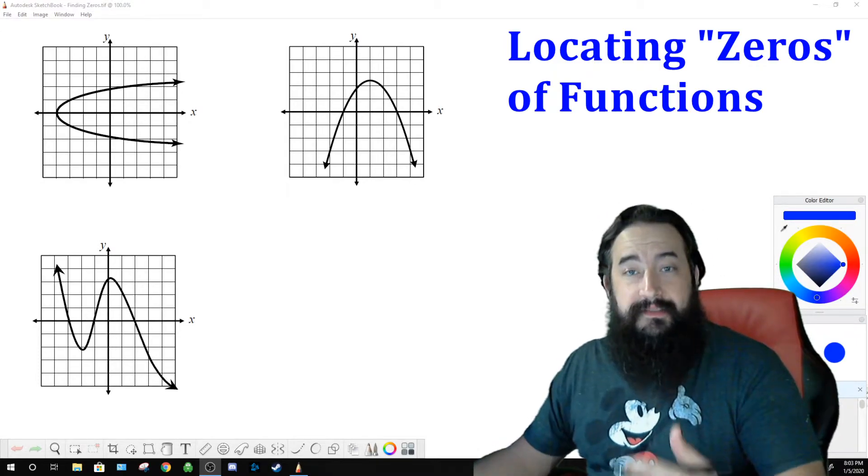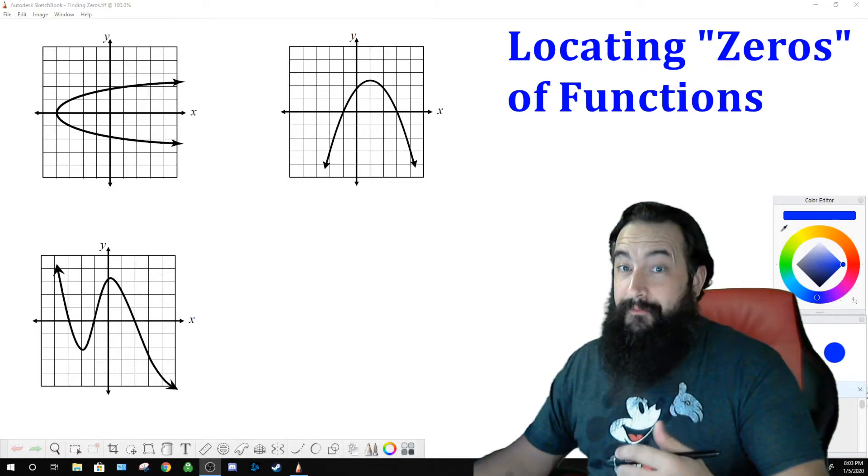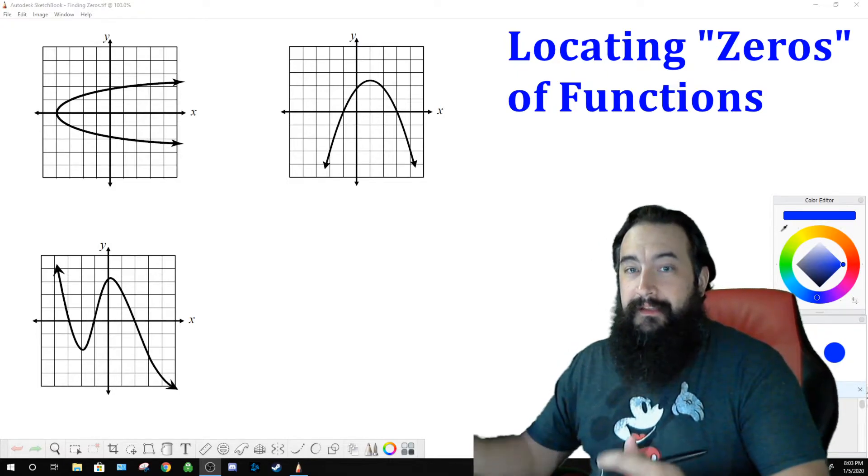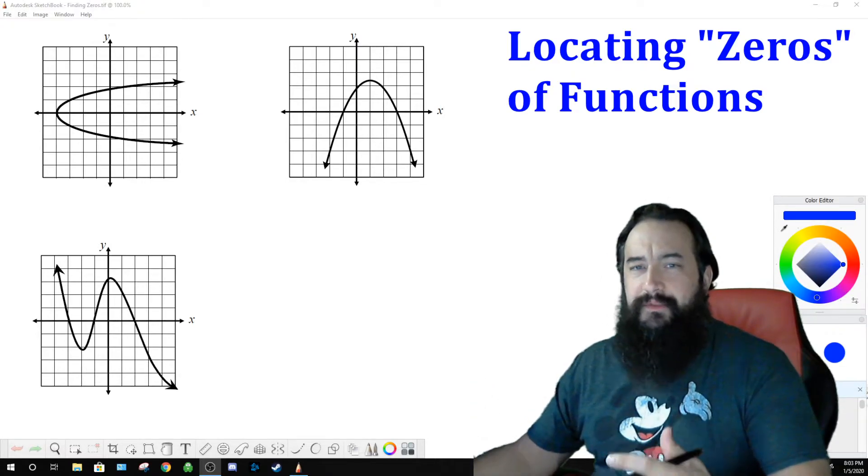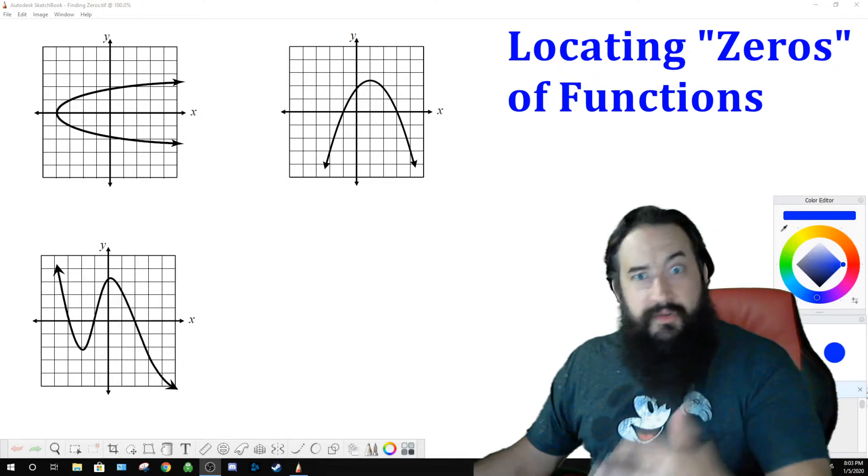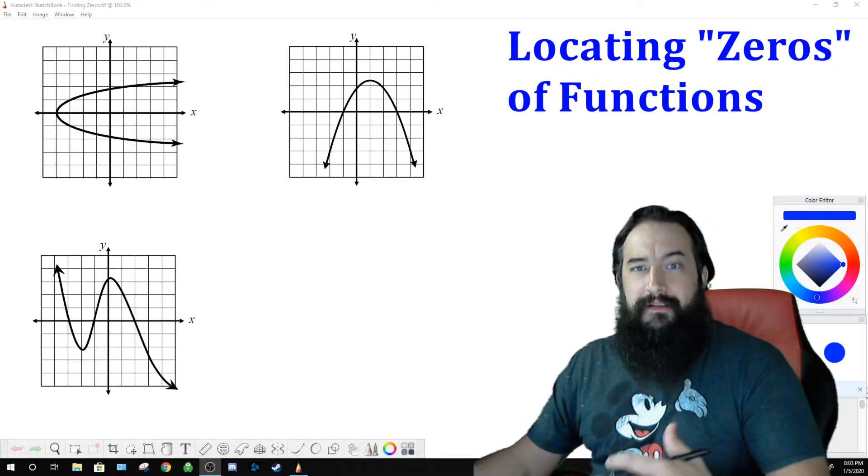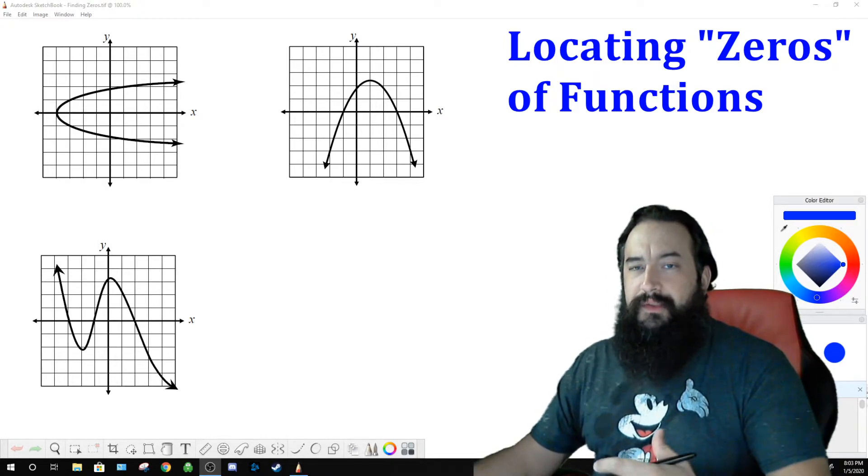When y is equal to zero, also the function is equal to zero, the function's output is the same thing as y. I know this is really confusing at this point, probably, but the more we do it, the better I think you'll understand, and the more used to it you'll be, hopefully.